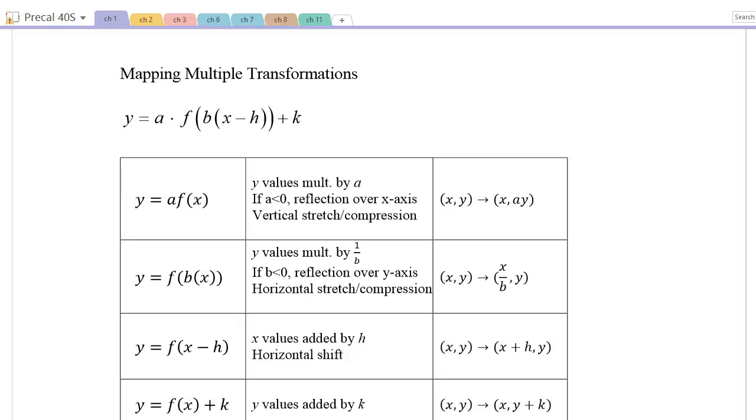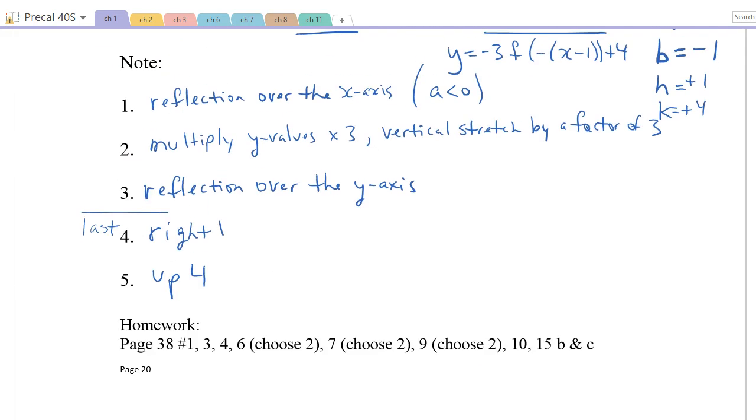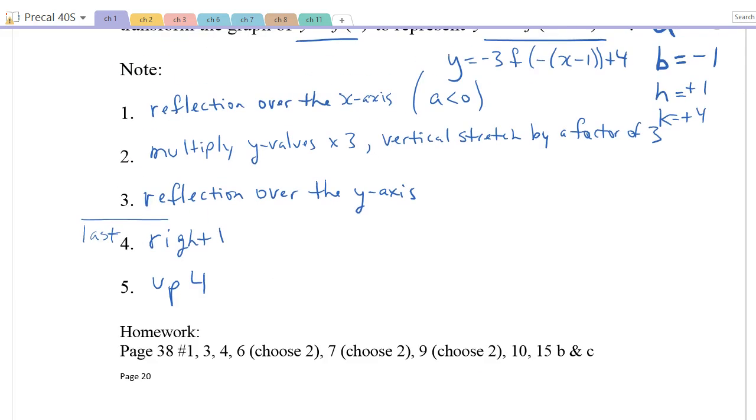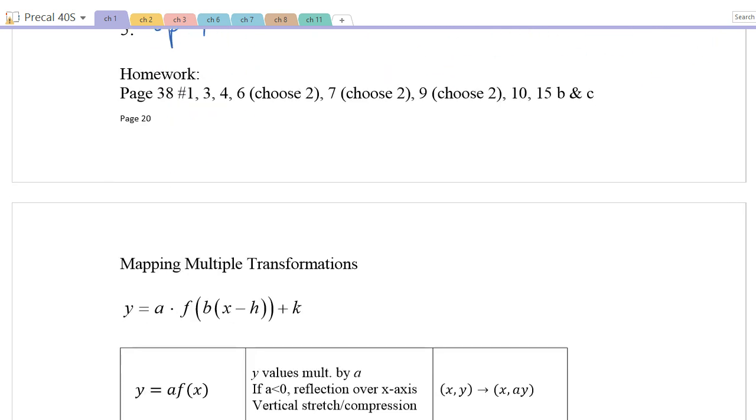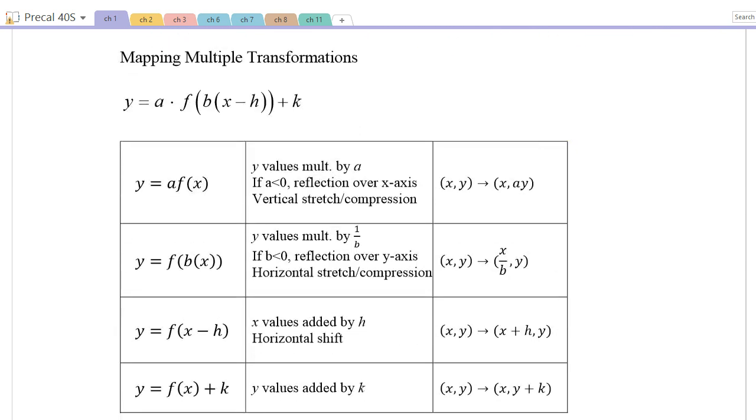So before we finish 1.3, I wanted to show another way of mapping multiple transformations. In our previous page, we go through all the transformations, reminding you that the left and right and up and down should be done last. We see the shape change through each of the transformations. There's also a way that we can kind of mathematically, using mapping, do all of these at the same time.